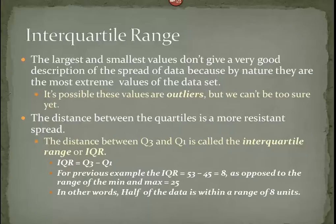Now, another way for us to measure spread is to talk about the inner quartile range. The inner quartile range tells us where the middle-most 50% of my data is located between. Because a lot of data sets always contain extreme values, the largest and smallest don't always give us a good description of the spread of the data, because by nature, being the largest and the smallest, they would always be the most extreme values of the data set. It's possible that these values are outliers, and so we can't be too sure how representative they are of the overall set of data.